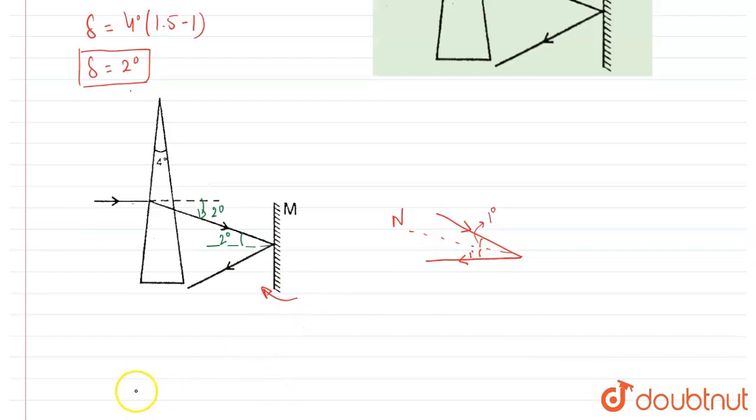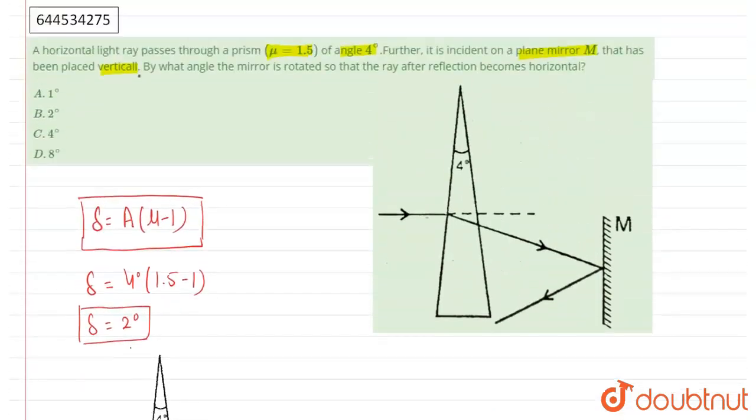When we rotate 1 degree, it will make 1 degree with the incident ray and the reflected ray will be horizontal. So the correct option is A.